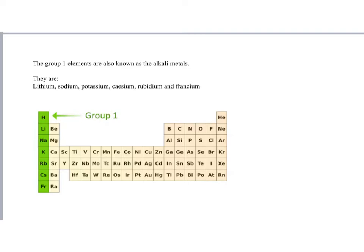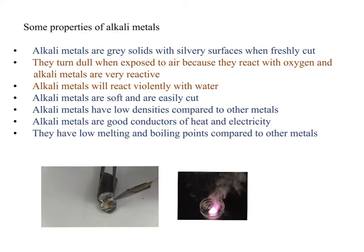Group 1 elements are also known as the alkali metals. Group 1 metals have some properties in common with all metals and some things that are slightly different. Alkali metals are grey solids with silvery surfaces - that's something you would expect of most metals. They do react very quickly with air and turn dull. In the bottom picture, you can see this is potassium, and this part is quite dark, but where it's been freshly cut is silvery.